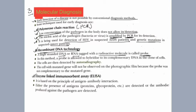We already studied VNTR probe in DNA fingerprinting — that was a repeated VNTR sequence. Here, the probe is a single-stranded DNA or RNA tagged with a radioactive molecule. In this method, the probe is allowed to hybridize with its complementary DNA.